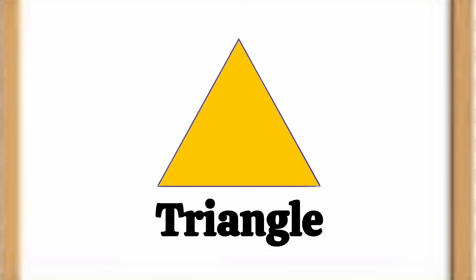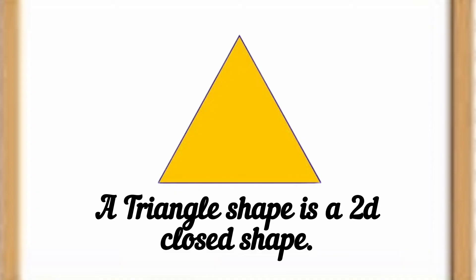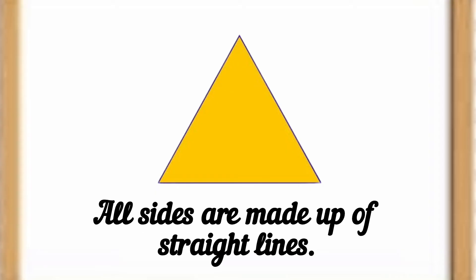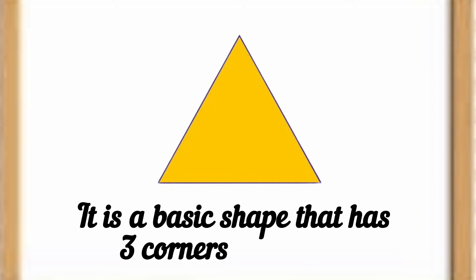Hello! In today's video we will learn about triangles and triangular objects. A triangle shape is a 2D closed shape. This is a flat shape. All sides are made up of straight lines. It is a basic shape that has 3 corners and 3 sides.